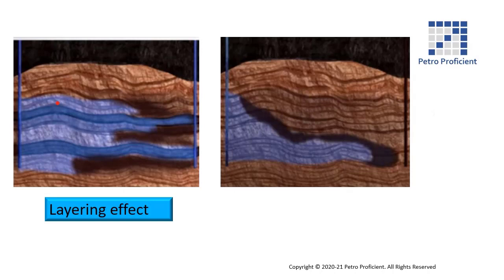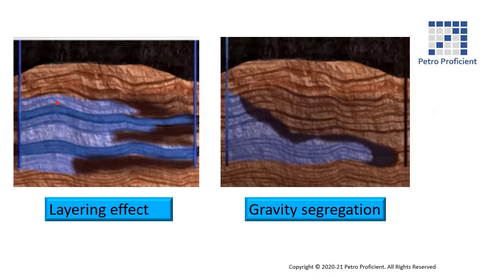Water, being heavier than oil, tends to slump down. This is called gravity segregation. Gravity segregation leads to early breakthrough of the injected fluid. These two effects reduce the vertical sweep efficiency.